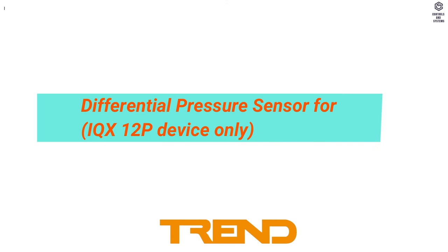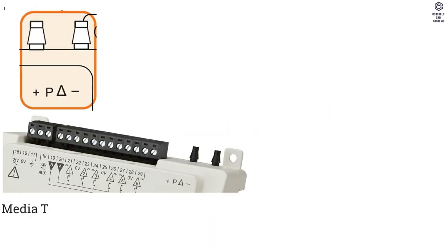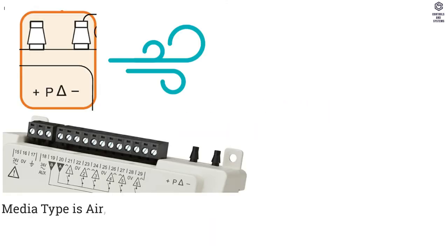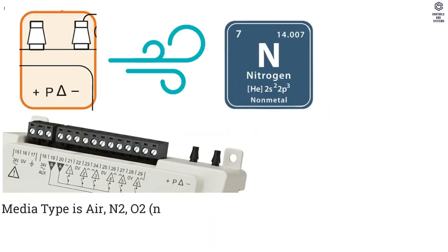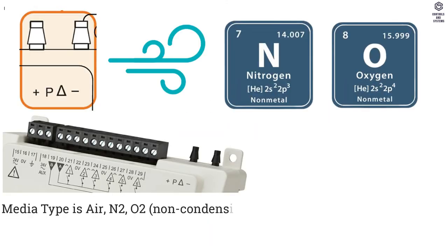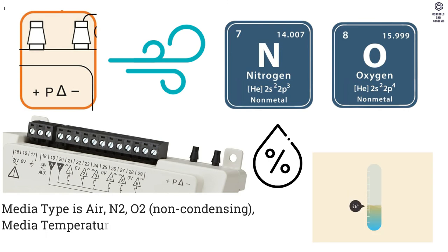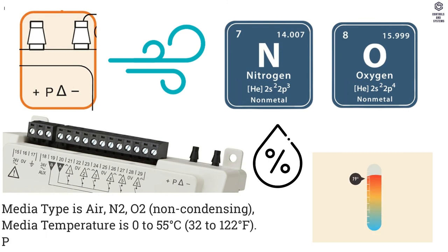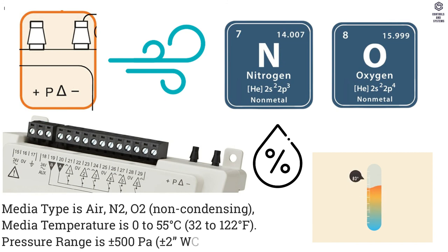Differential Pressure Sensor: Media type is air, N2, O2 (non-condensing). Media temperature is 0–55°C. Pressure range is ±500 Pascals.